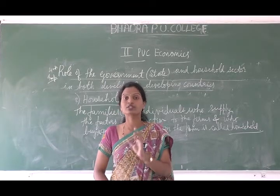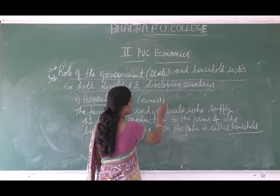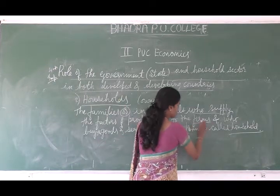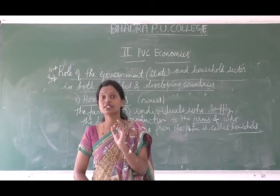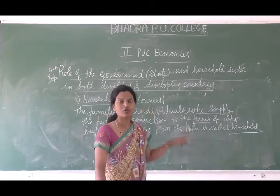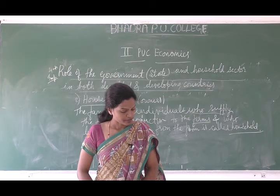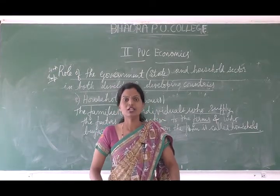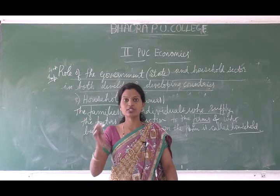So households are considered the owners because they are going to supply the different factors of production to the firms. The firms need to carry out production activities — they need raw materials and different factors. Households supply those. Factors of production include land, labour, capital, etc. For labour, people from the public join the factory and work there as workers or labourers.